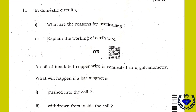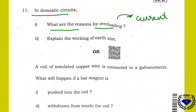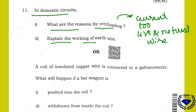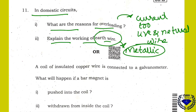Question number 11: what are the reasons for overloading in a domestic circuit? Overloading happens when the current increases abruptly beyond the capacity of the circuit, when too many appliances are connected to one circuit, or when the live wire and neutral wire touch each other. Regarding the working of the earth wire: metallic appliances like refrigerators, washing machines, and computers are connected to the earth by using an earth wire. Any leakage current is transferred to the ground, preventing electric shocks.